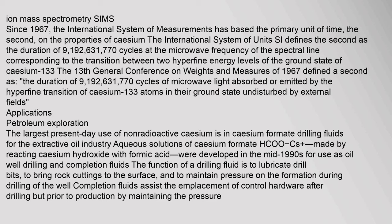Since 1967, the international system of measurements has based the primary unit of time — the second — on the properties of caesium. The SI defines the second as the duration of 9,192,631,770 cycles at the microwave frequency of the spectral line corresponding to the transition between two hyperfine energy levels of the ground state of caesium-133. The 13th General Conference on Weights and Measures of 1967 formalized this definition.